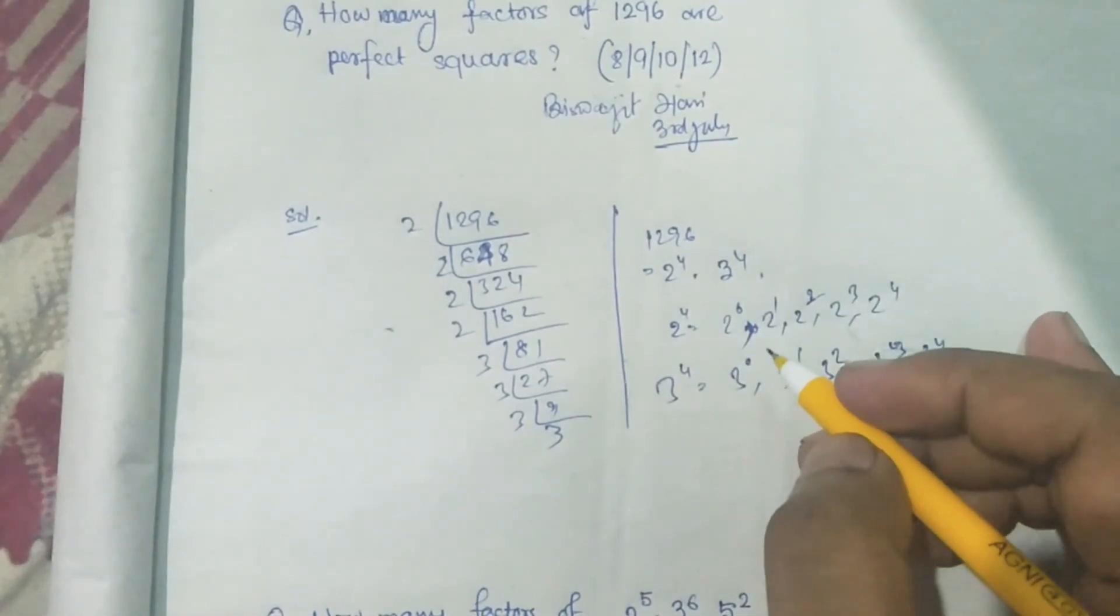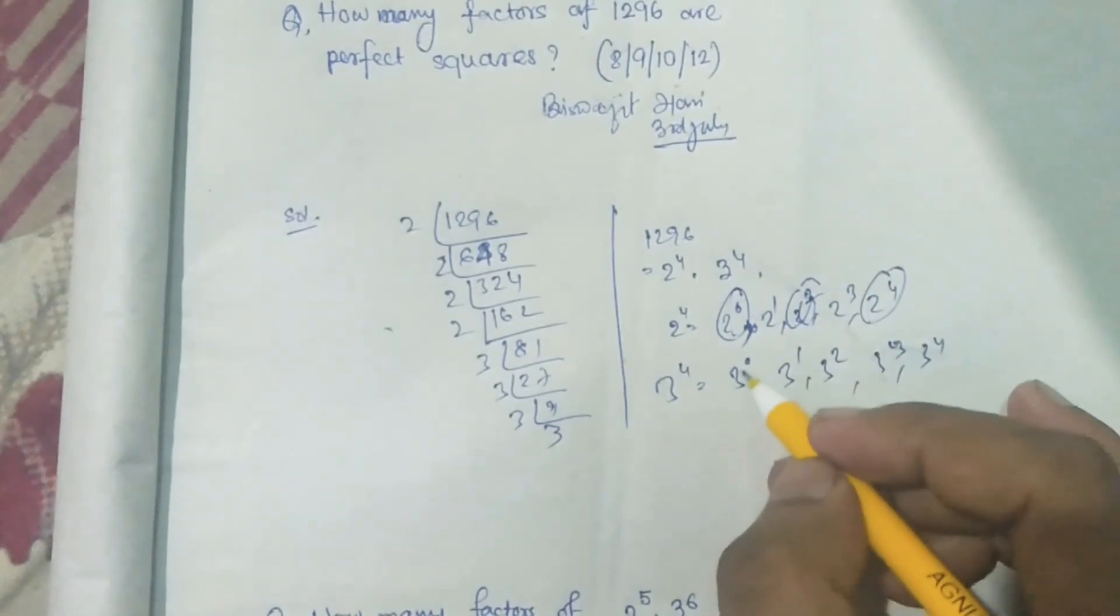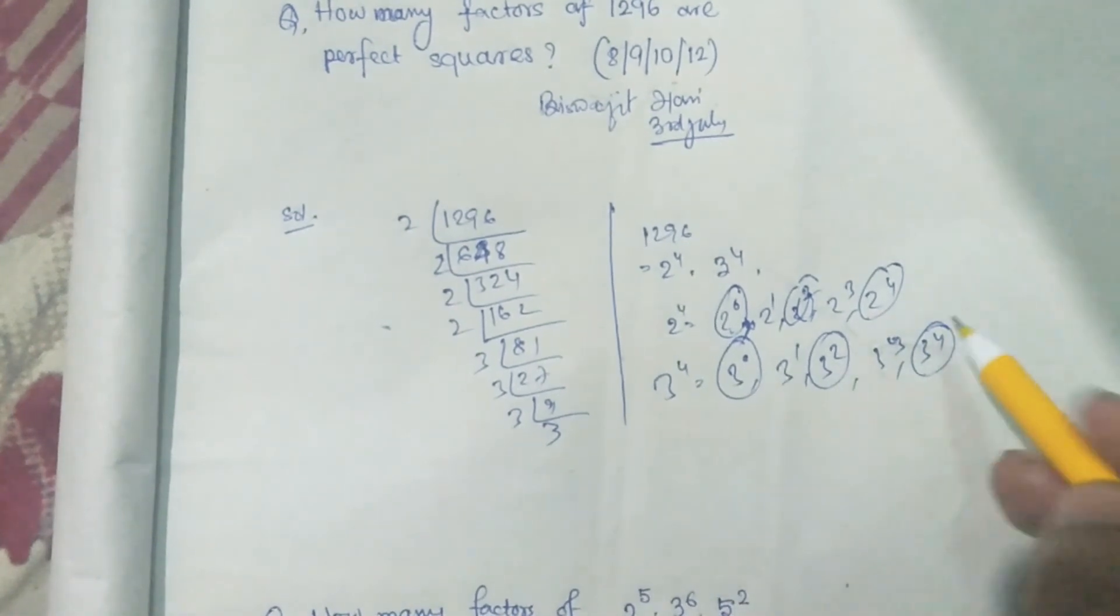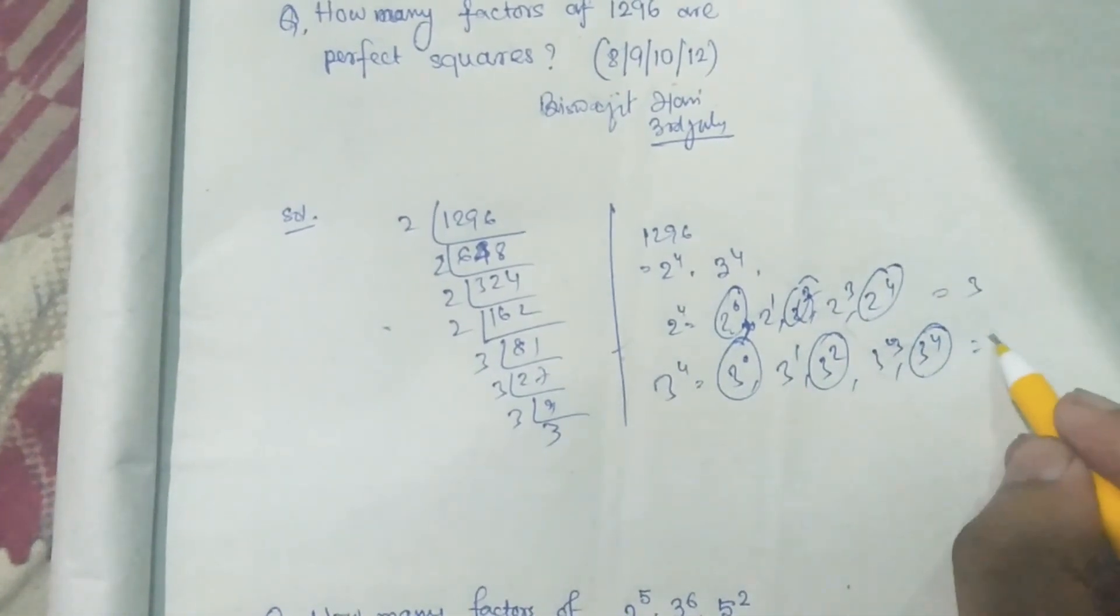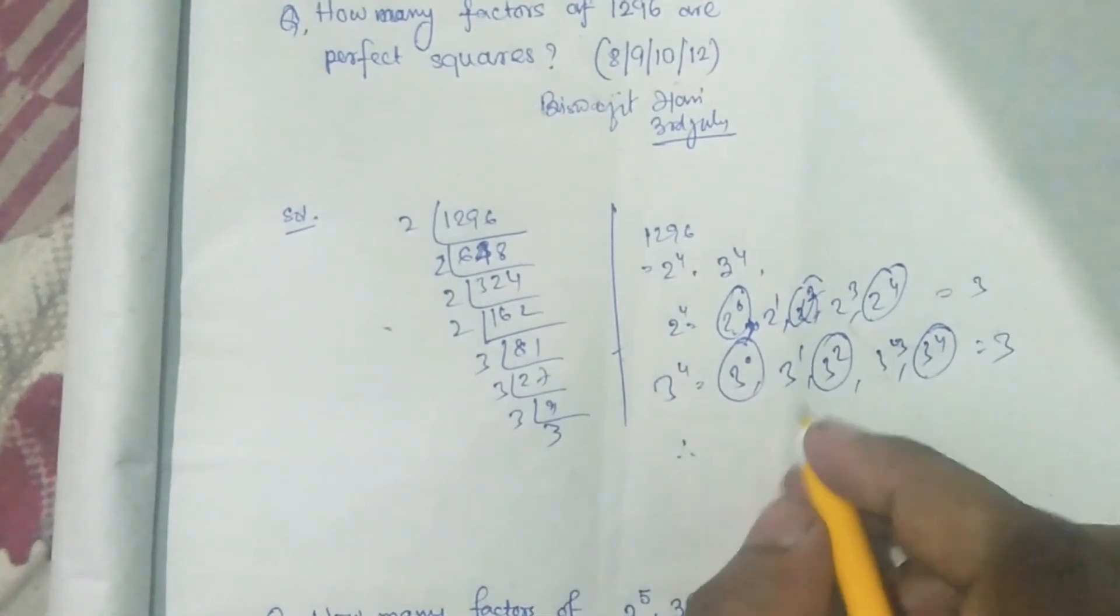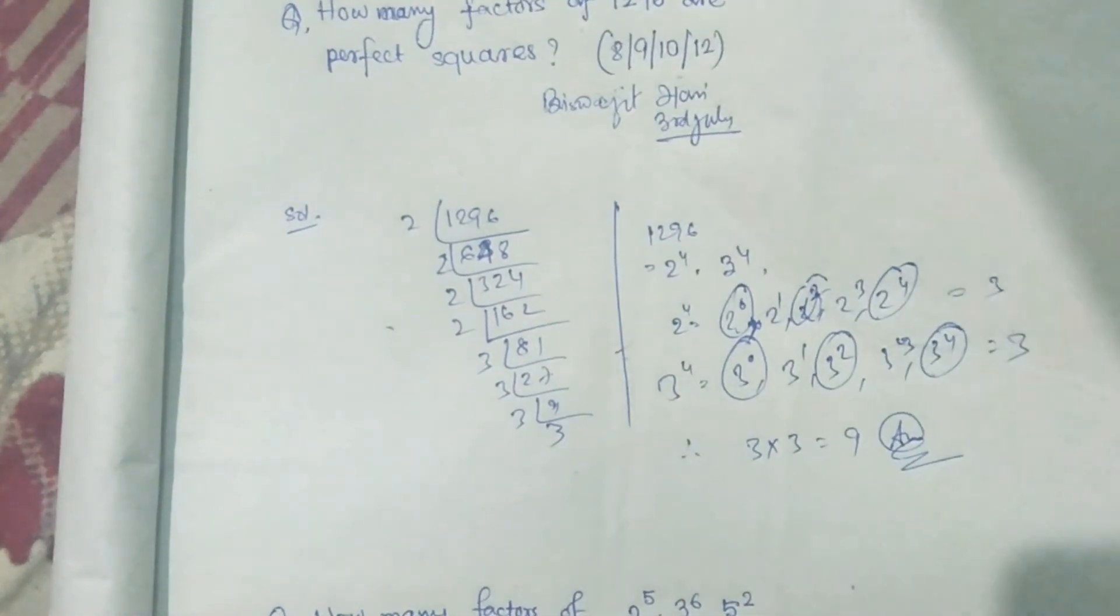So, we have to find the perfect square. We have seen that 2 to the power 4 has 3 perfect squares, and 3 to the power 4 has 3 perfect squares. So total perfect squares of 1296 is 3 into 3, which is 9.